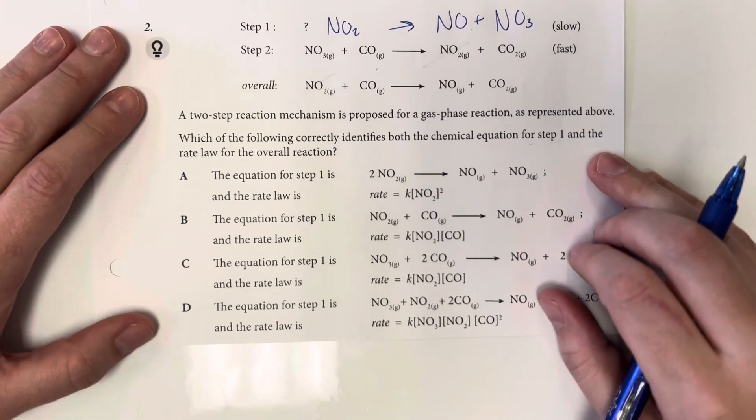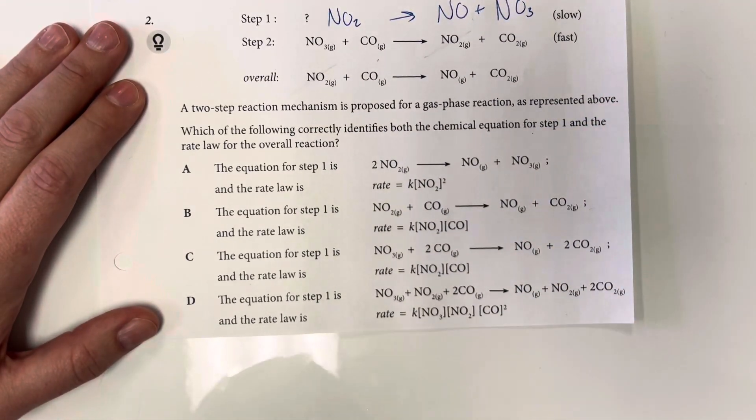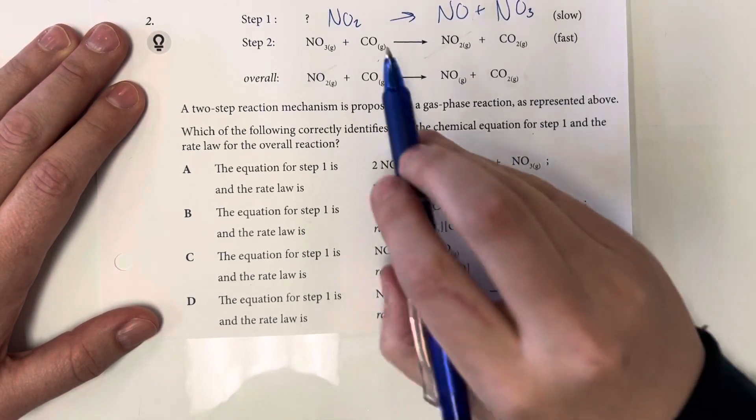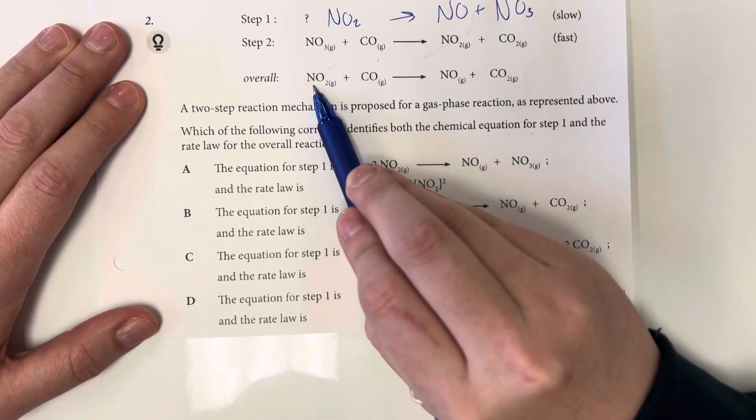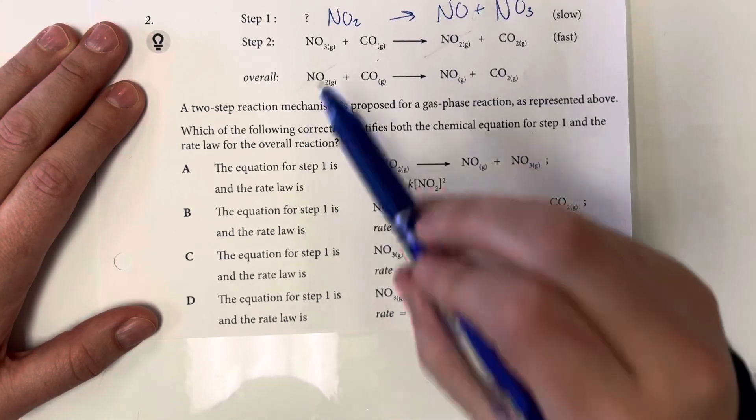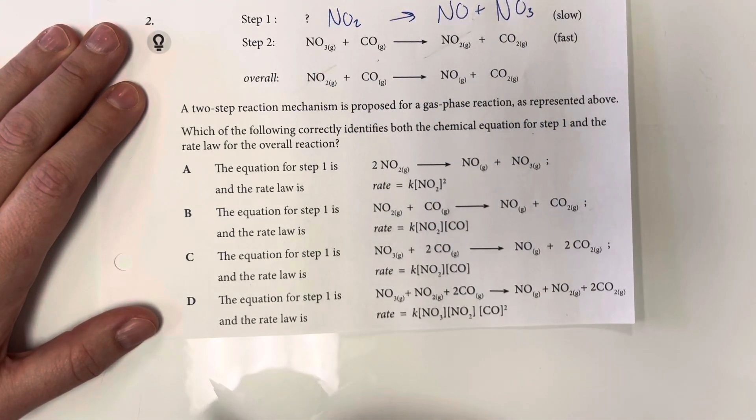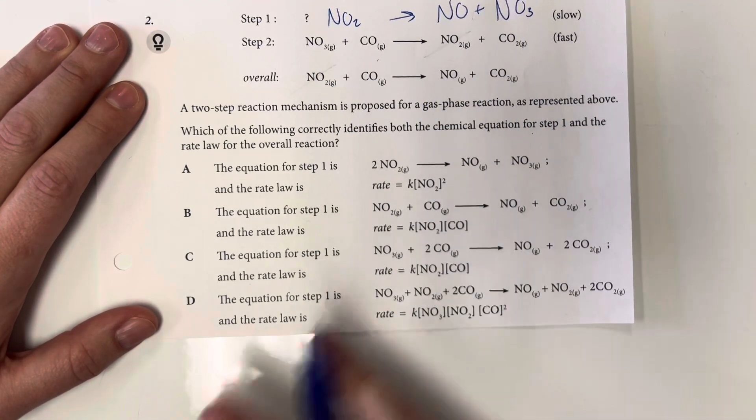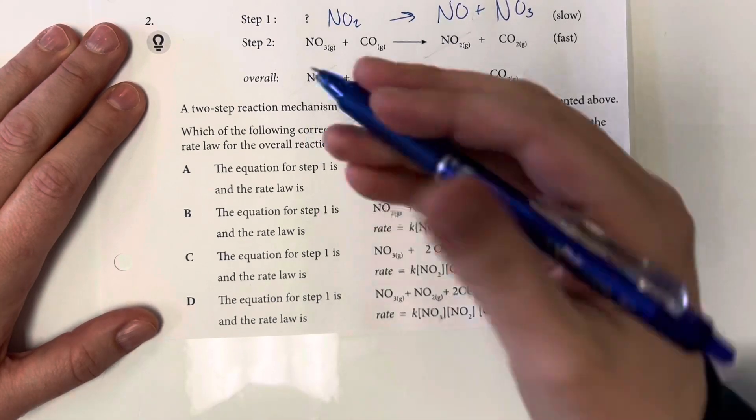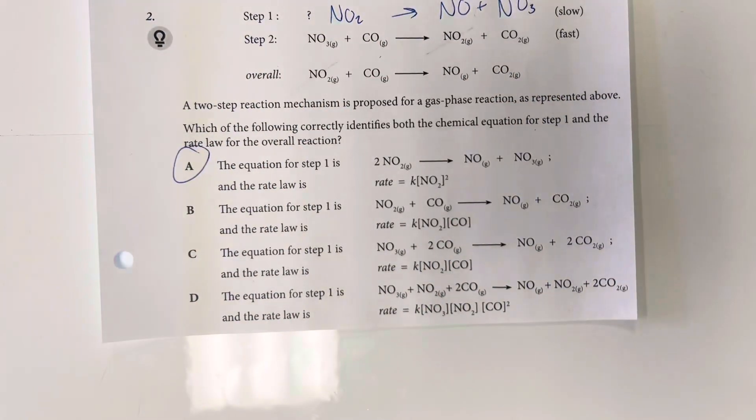As I look through the option choices here, the only ones that allow for the appearance of the things that were missing and the cancellation of the things that no longer appear is going to be option choice A.